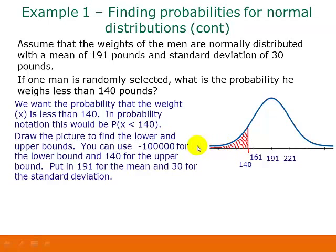So again, we don't have a bound on the left end, so we're going to use a large negative number like -100,000 for our lower bound. We'll use 140 for our upper bound. And this time we're putting in 191 for the mean and 30 for the standard deviation.